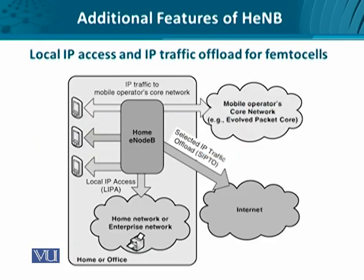Consider a home or office environment where we have a Home Node-B providing access to user equipment or mobile terminals. The primary traffic route is towards the Internet; however, the traffic is routed through the serving gateway and the packet data network gateway. This means the Home Node-B typically acts as an intermediary between the user equipment and the serving gateway in the case of E-UTRAN.